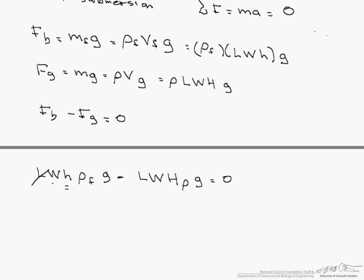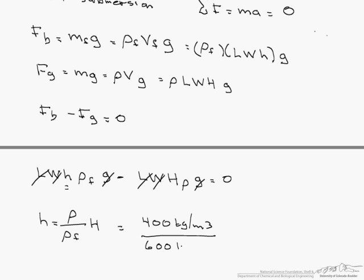And as you can see a lot of things cancel out and we are left with depth of submersion is the ρ of the box or the density of the box over the density of fluid times the height of the box, or 400 kg per m³ over 600 kg per m³ times 6 cm, which equals 4 cm.